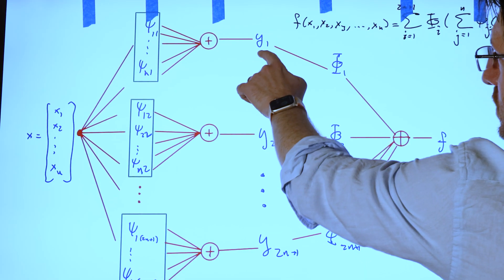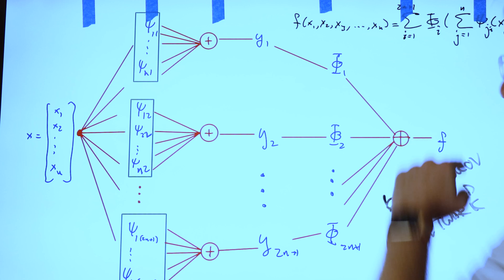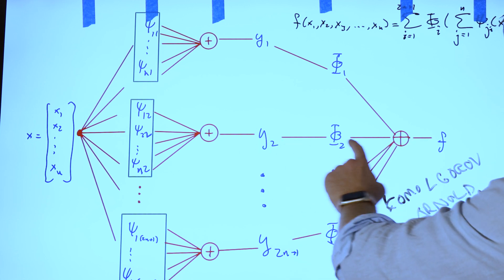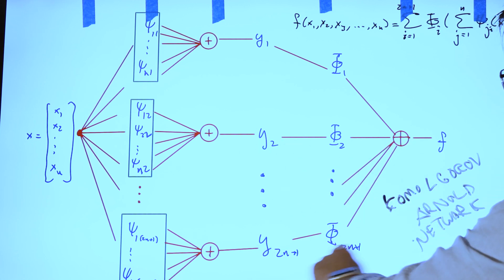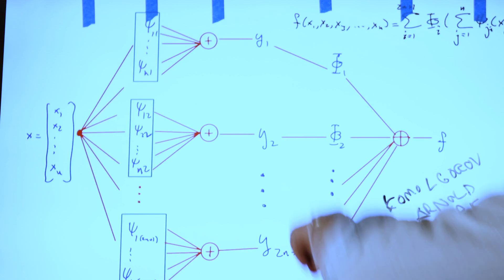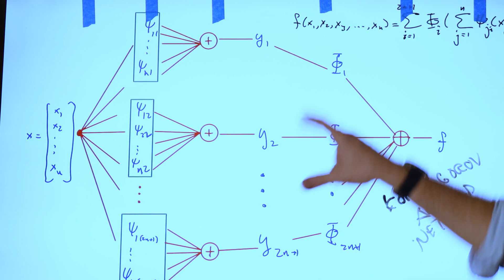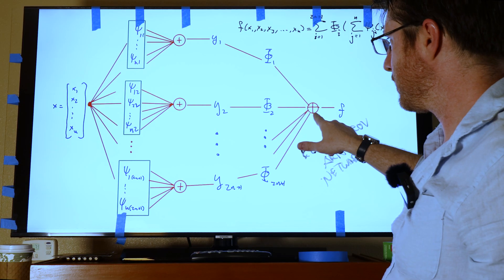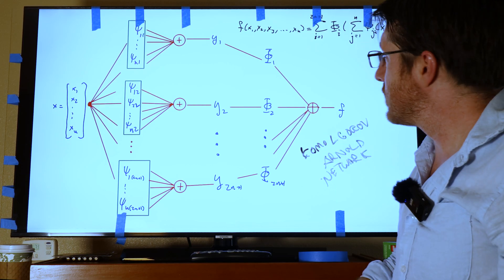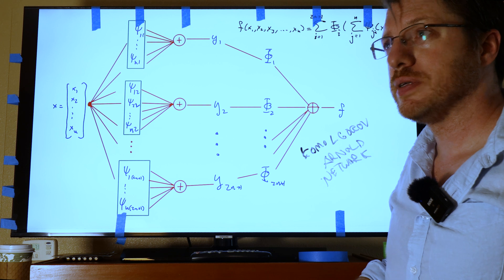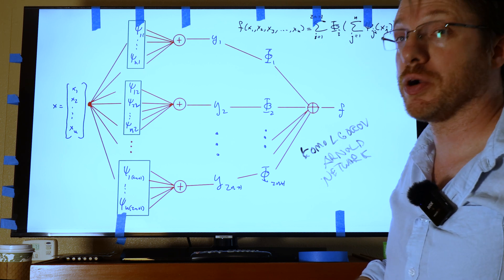And so then what we do is we take this y1 and we put it into phi 1. And we take this y2, we put it into phi 2. And we take this y_{2n+1} and we put it into this phi of 2n+1. And after we do that, we take these guys and we go ahead and we add them together. And then that is what gives us f. And so that is our Kolmogorov-Arnold network based on the Kolmogorov-Arnold representation.